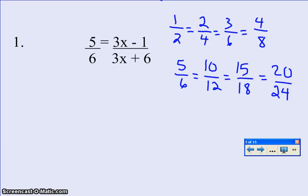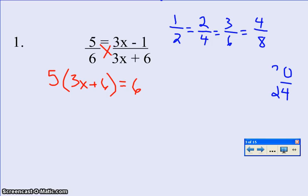So whenever you see a problem with two fractions and an equal sign between it, to solve something like this, you'll start by cross-multiplication. Always remember, two fractions with an equal sign between, you're going to cross-multiply. So start by making your x, and that will help you pair things up correctly. The 5 needs to multiply with the 3x plus 6, and the 6 gets to multiply with the 3x minus 1.